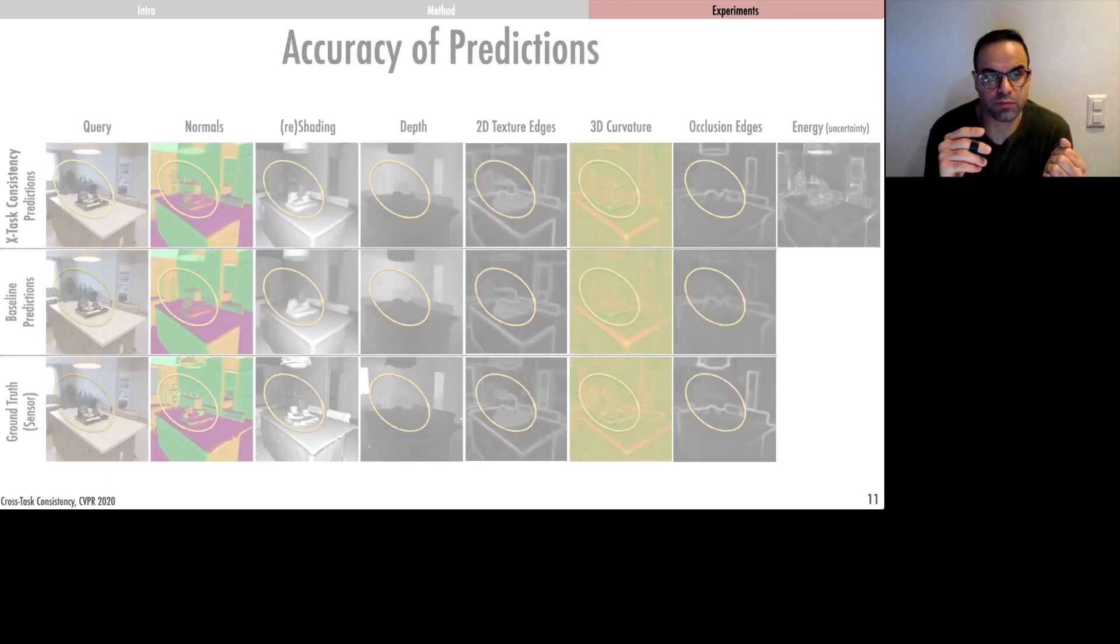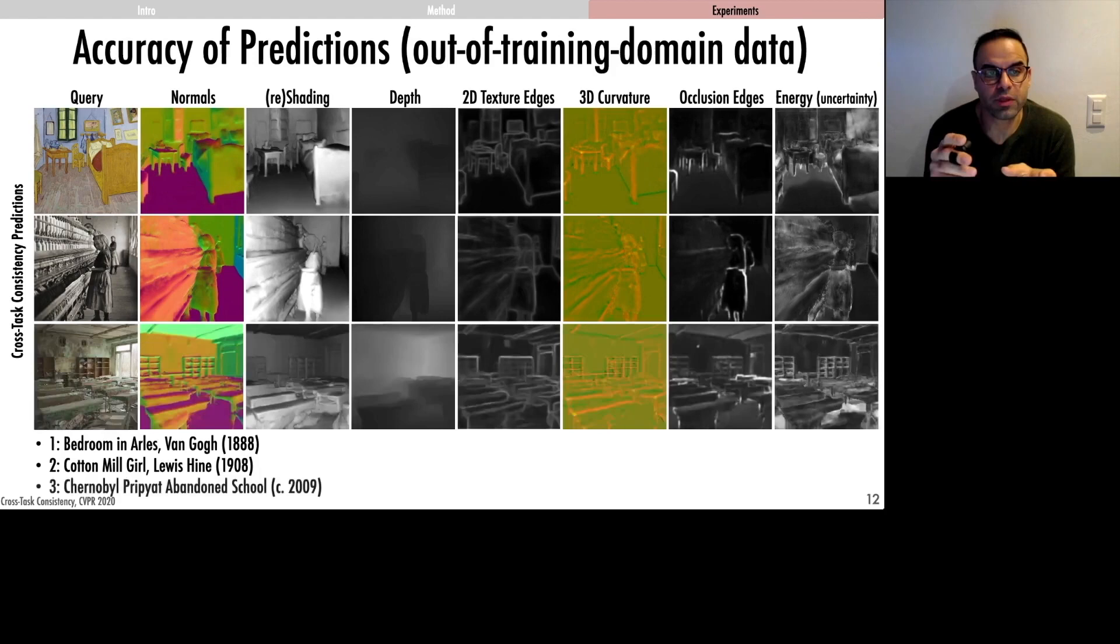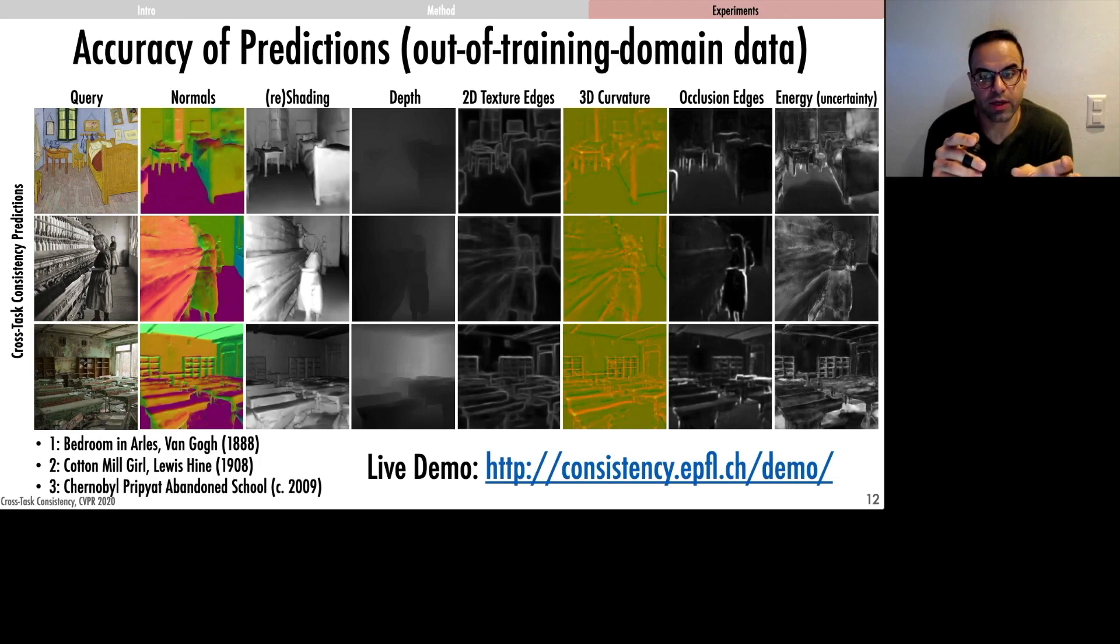Here are sample results of testing the models on images that are far from the training data distribution. You can qualitatively see that the models continue to perform reasonably well, and you can see the paper for the quantitative analysis of generalization. You also have a live demo web page where you can upload an image yourself and receive the prediction results.